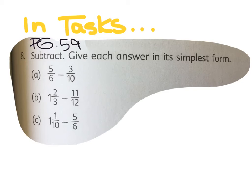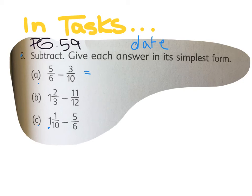In your tasks section, write page fifty-nine and put today's date. I'll be checking this when you come in for English. I want you to put eight A, B, and C and find the answers. You may need to change a whole number to a fraction and add it. Good luck.